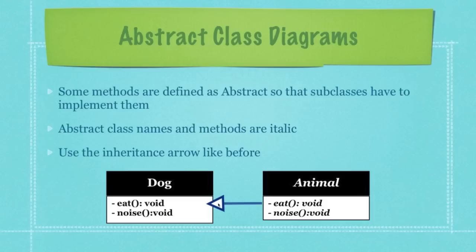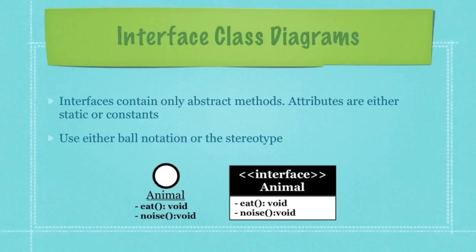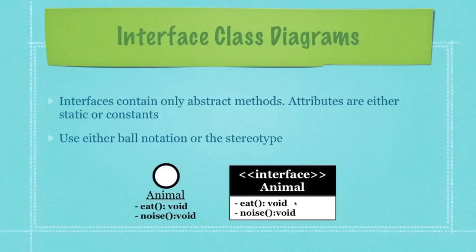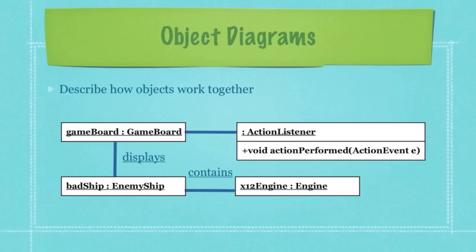Interfaces contain only abstract methods, and all attributes are either static or constant. You can define interfaces in class diagrams using ball notation — shown on the left with the interface name underlined — or using a stereotype, which lists this as an interface with the interface name. When using the stereotype notation, you do not list the abstract methods in italics, though doing so wouldn't be wrong.